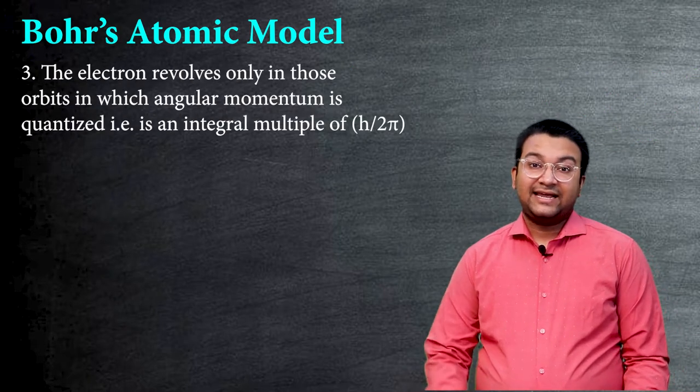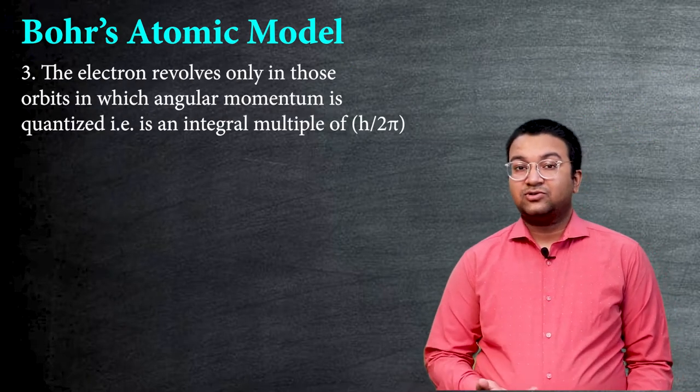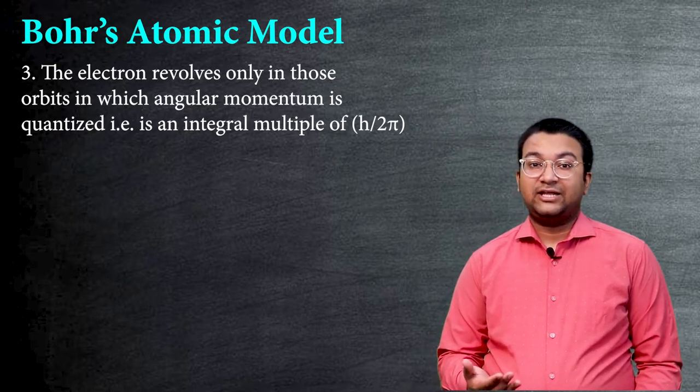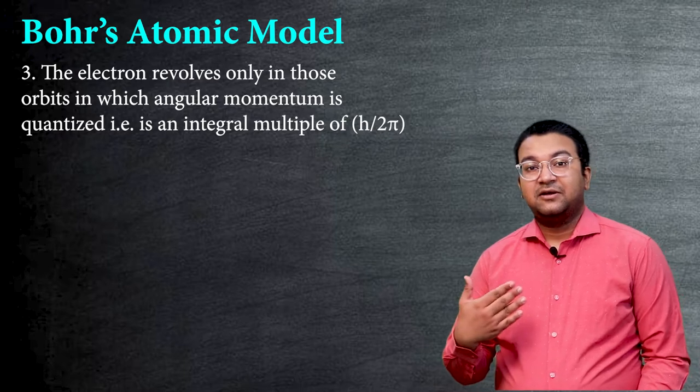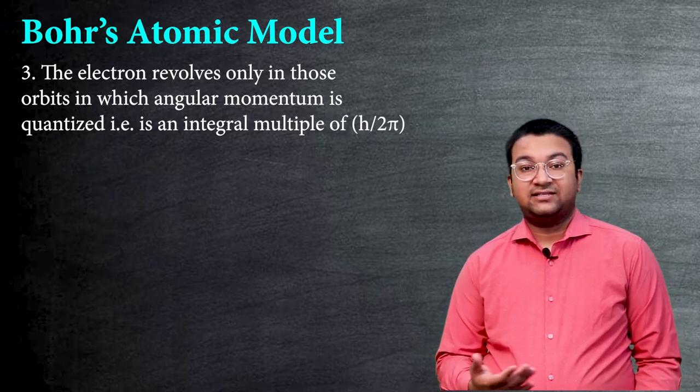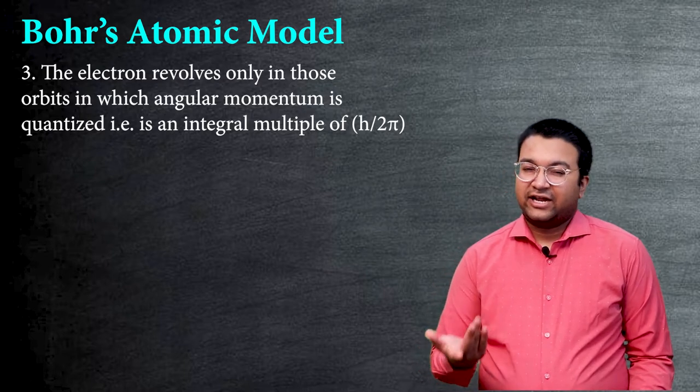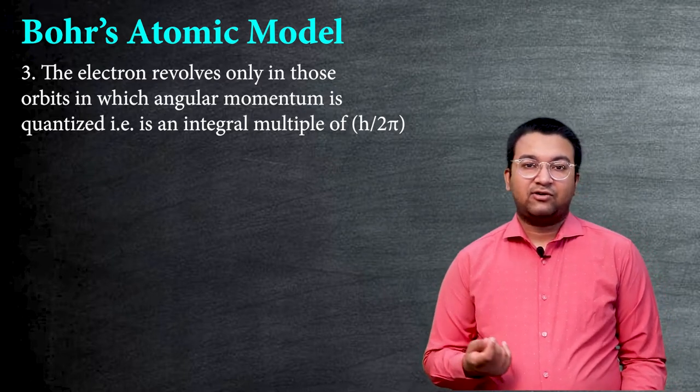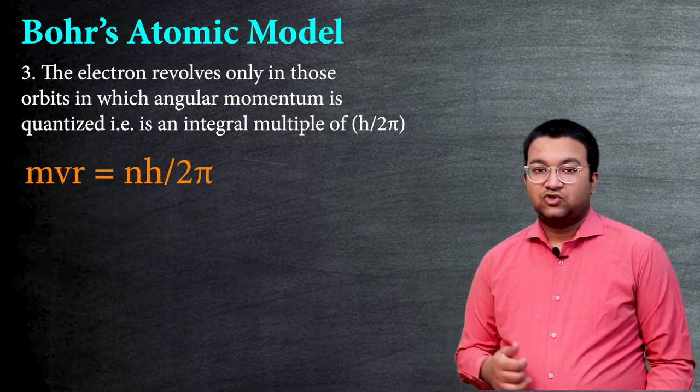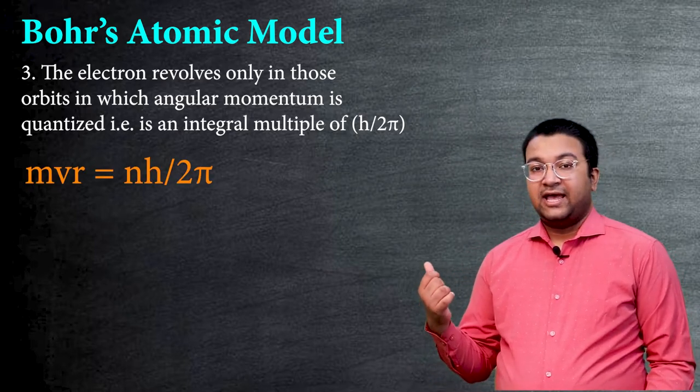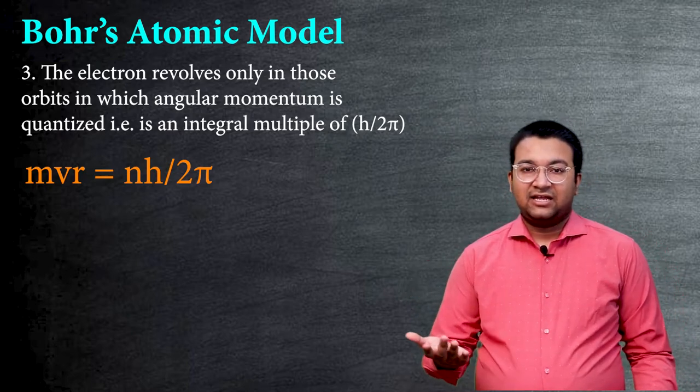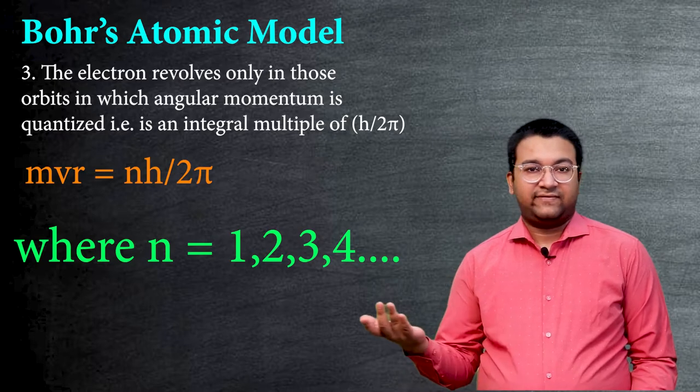The next point is that electron revolves around only those orbits for which the angular momentum is totally quantized, or in other words we can say it is a multiple of h by 2π. So h by 2π is the angular momentum and for any orbit, any circular object which is revolving in a circular path, the angular momentum can be written as mvr. So we have to write mvr equal to h by 2π into n. Why n? Because this n can be any natural number: one, two, three, to infinity, it can be anything.